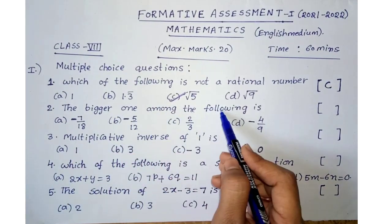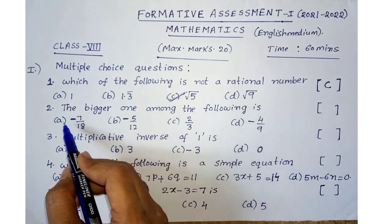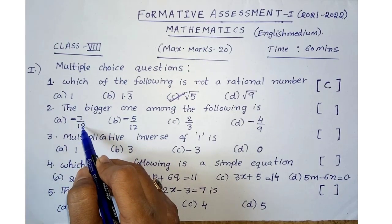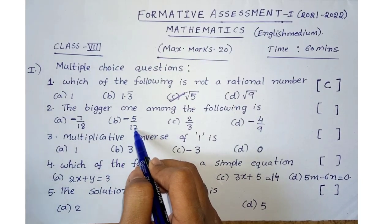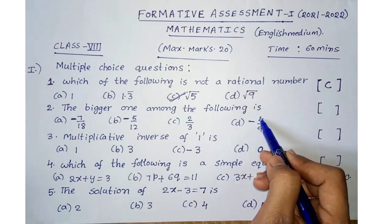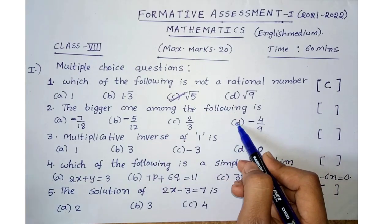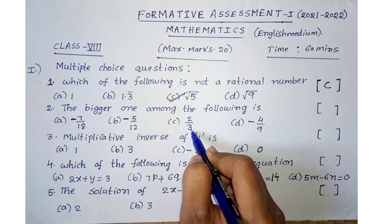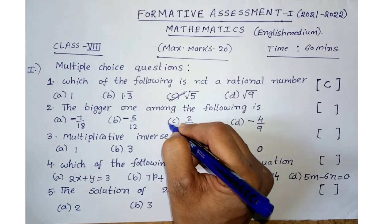Second one: find the bigger number among the following. Option A is minus 7/18 — a negative number. Option B is minus 5/12 — also negative. Option D is minus 4/9 — also negative. So options A, B, and D are all negative numbers. Option C is 2/3, which is a positive number. A positive number is always bigger than negative numbers, so the answer is option C.